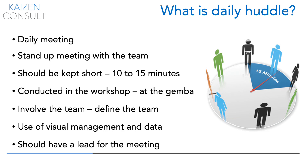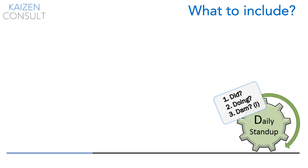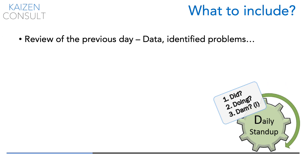The team should get to a point where the meeting happens even if you are not there. What should that meeting include? Quickly review the previous day's activity — what are the critical data you are following? Are they good or bad? If bad, what happened? And identify the problems.